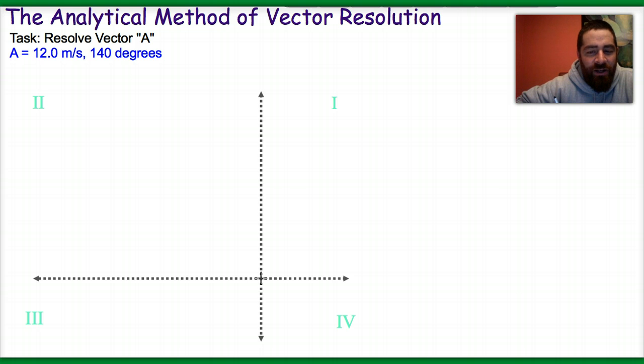I know that it's going to be 40 degrees above the negative x axis. So let's say that this is roughly 45, so I'm going to be a little bit less than that. And I can label this as vector A if I want to.